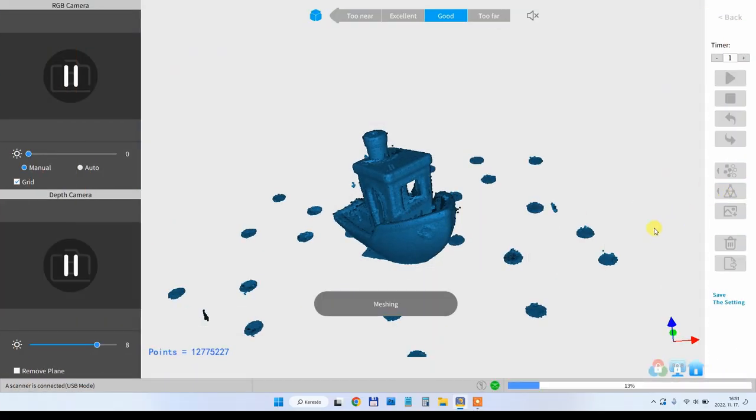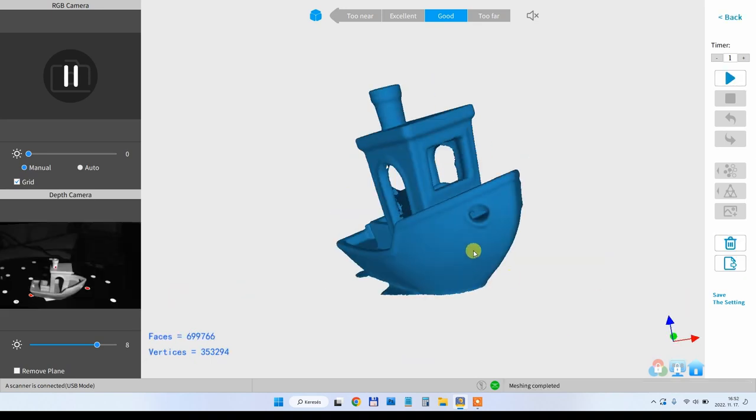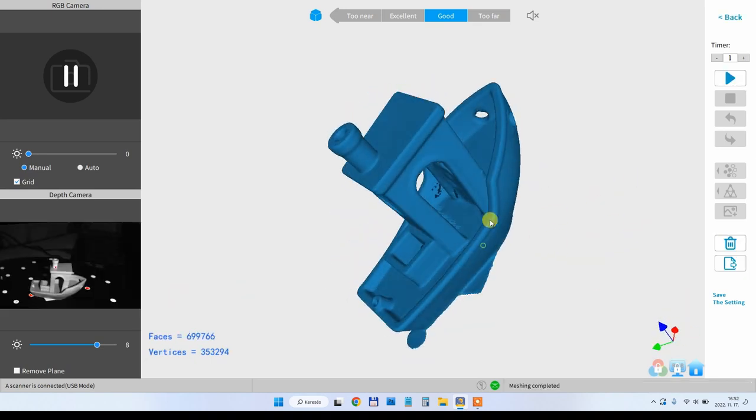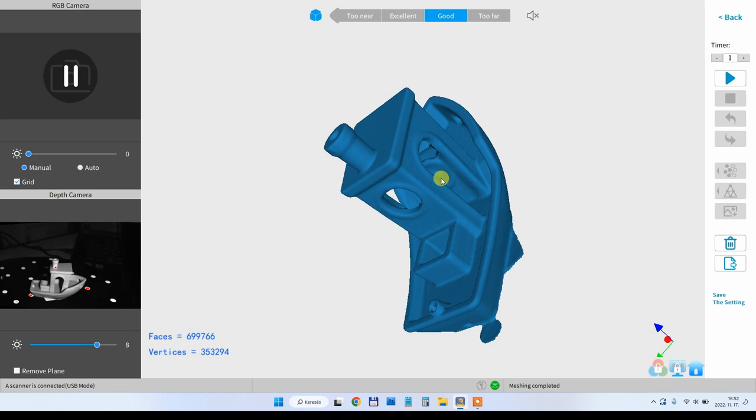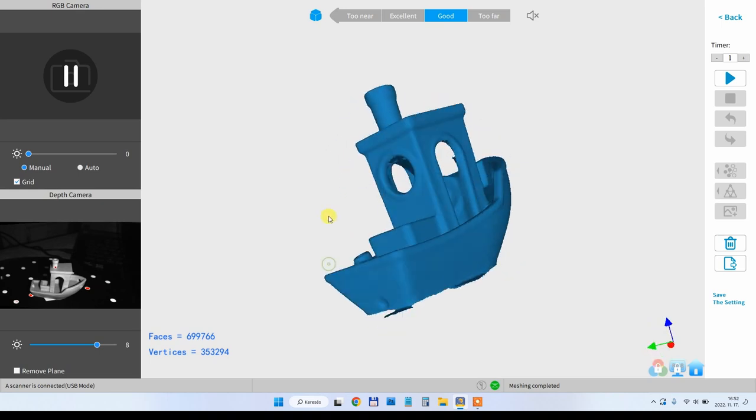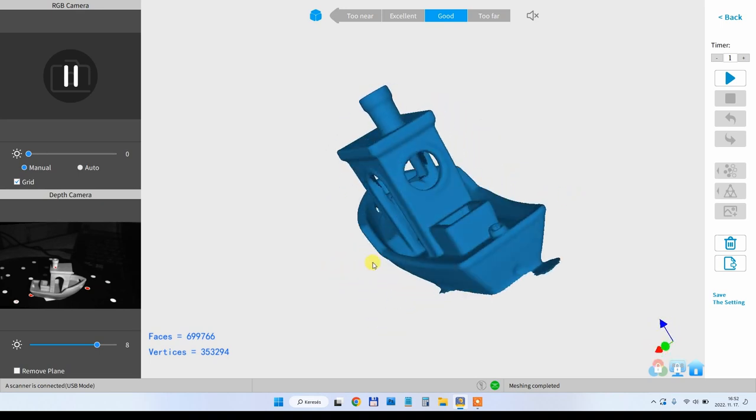And this is the point cloud and after a click on meshing I will get these surfaces. Really a lot of details even from the inside. And of course from outside too. Not perfect but very nice benchy.